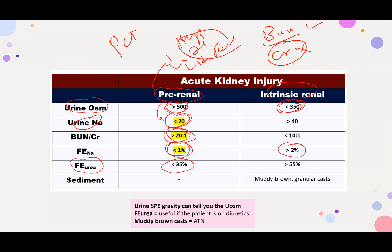The fractional excretion of urea is useful for patients on loop diuretics like furosemide. On furosemide, urinary sodium can be higher than 20 mEq/L even in pre-renal azotemia. So to differentiate, you measure fractional excretion of urea — if it is less than 35%, it supports pre-renal.